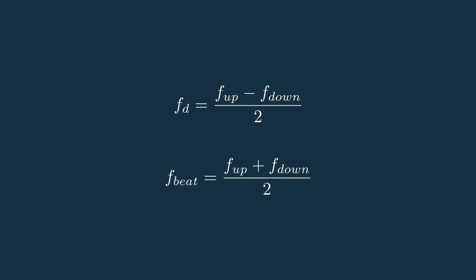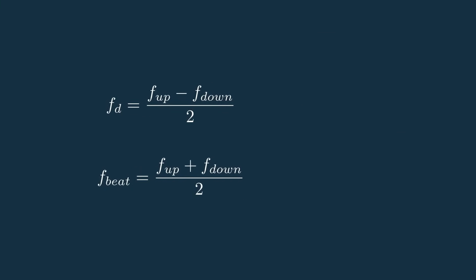So here we have equations for the Doppler frequency and the range beat frequency. We can then take these and plug them into the Doppler velocity equation and FMCW range equation to get information about how fast this target is moving and its distance from the radar.